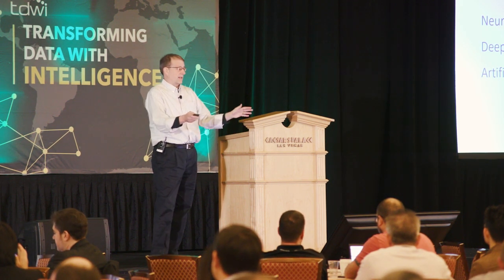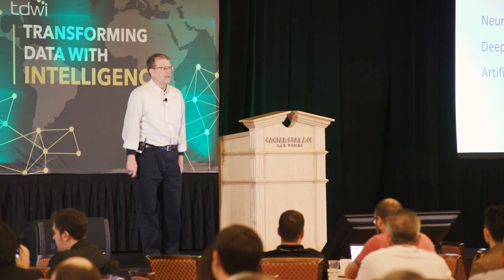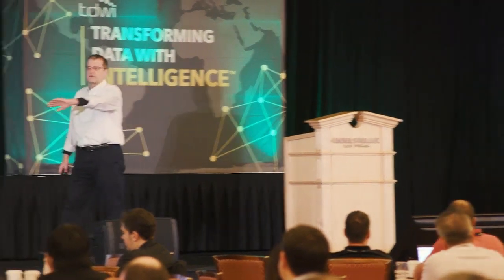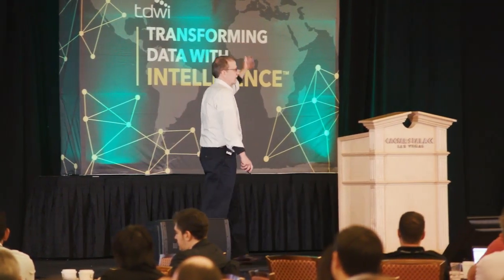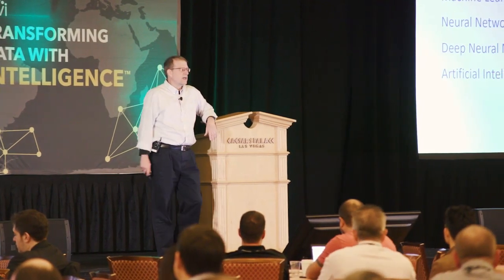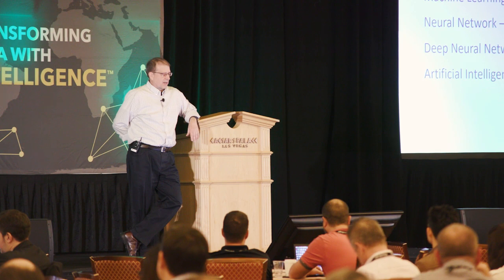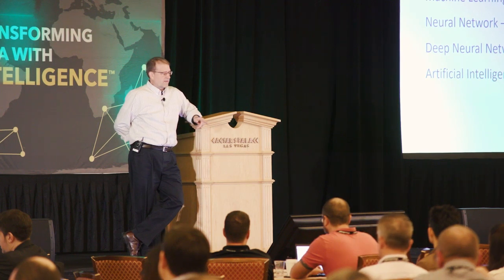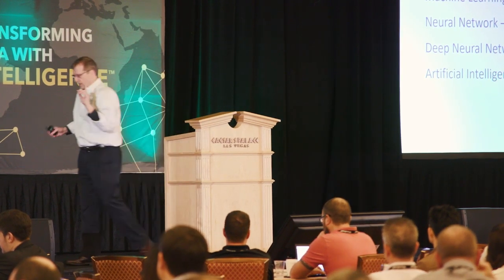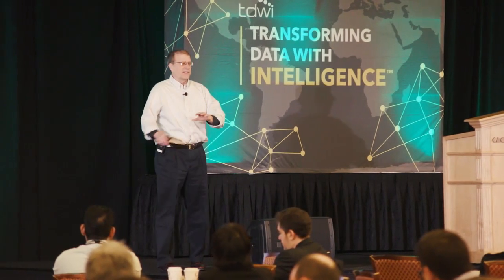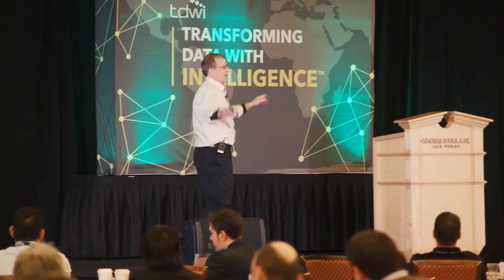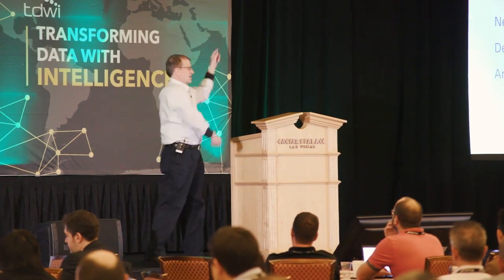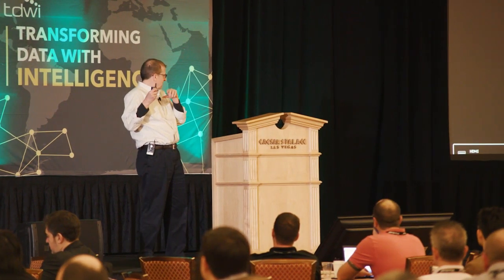A deep neural network is just a complicated neural network. Artificial intelligence is a term that's come and gone in and out of favor for decades, because it has consistently over-promised and under-delivered. But it's back in the news now. You're probably going to see some sort of a PowerPoint slide with Venn diagrams trying to describe the relationships between machine learning, data science, and artificial intelligence — but that's just an exercise in futility.